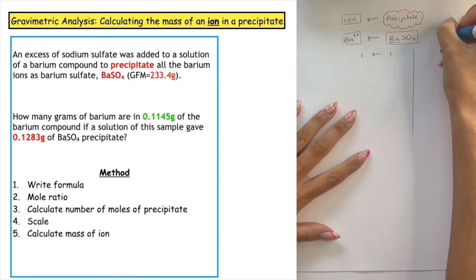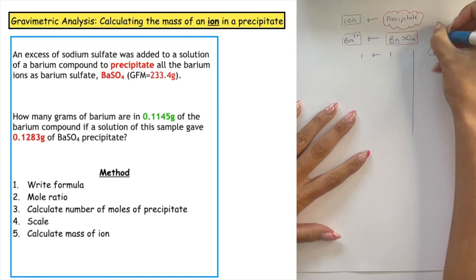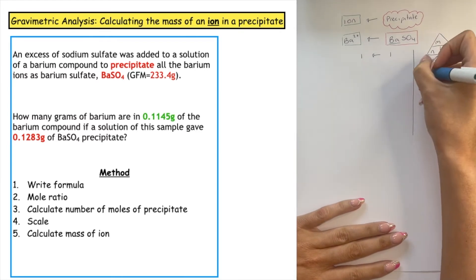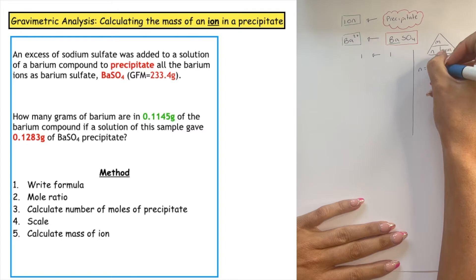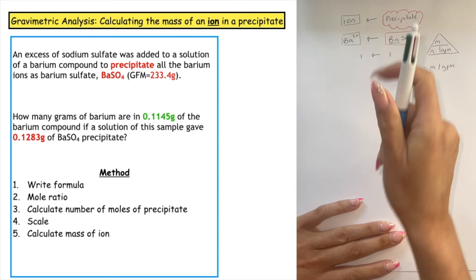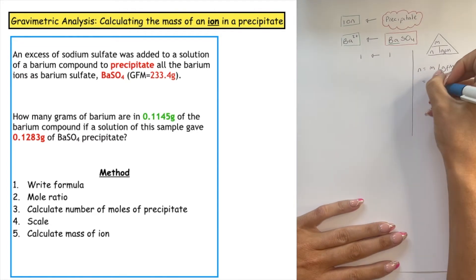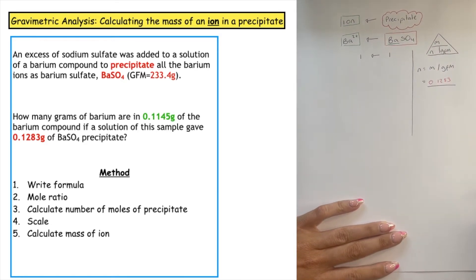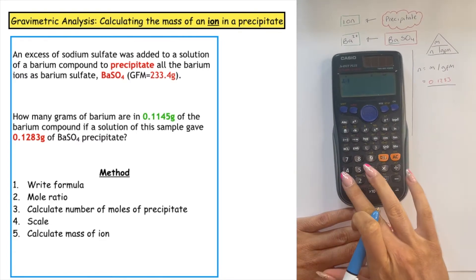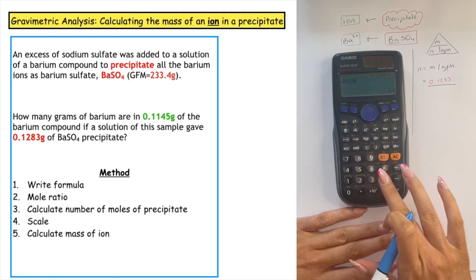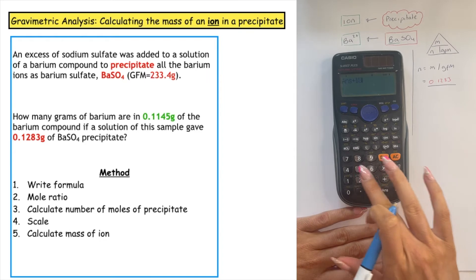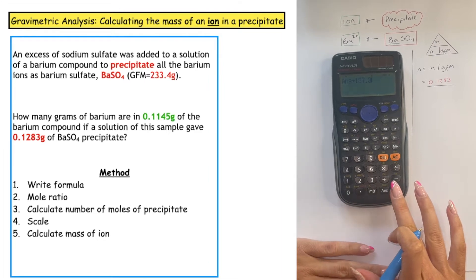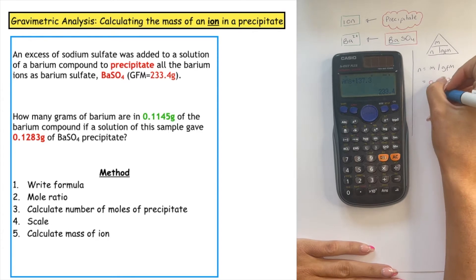We then want to calculate the number of moles, because that's the mole ratio we've worked out, and we're going to use the mass triangle because barium sulphate is a precipitate — a solid which has been formed — and we've been given a mass. To calculate the number of moles we do M over GFM. The mass of the precipitate is 0.1283, and we divide that by the GFM. Working backwards: 4 × 16 for the oxygen, plus 32.1 for the sulphur, plus 137.3 for the barium, giving a GFM for barium sulphate of 233.4.